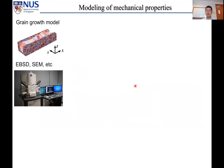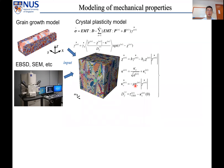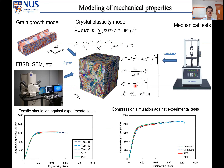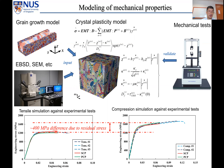With grain structure information from either simulation or experiments, we implement it into a crystal plasticity model and validate against mechanical tests. The results for tension and compression tests agree well with simulation. Notably, there is about 400 MPa difference in yield stress between tension and compression tests, which is mainly due to residual stress — indicating that residual stress is quite significant.